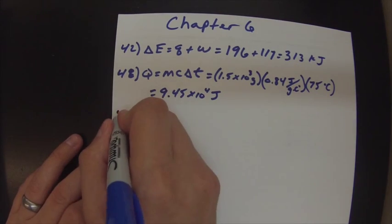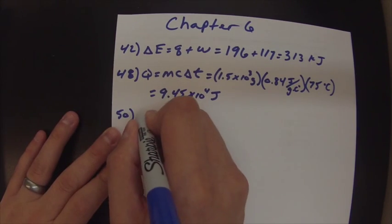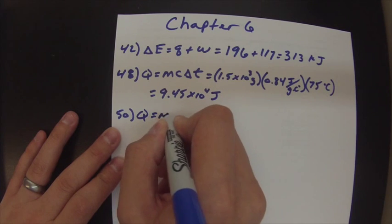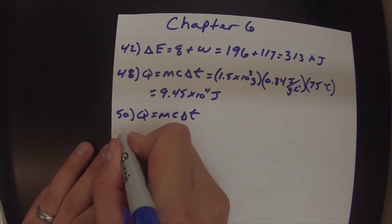Next up is number 50. Number 50 says for an unknown mass of each substance initially at 23 degrees Celsius, if it absorbs 1.95 times 10 to the third joules of heat, the final temperature is recorded. Find the mass. So we're using the same equation here, Q equals MC delta T. The only difference is here it gives us the energy, the specific heat, and the temperature change, and it wants us to calculate the mass. So it's really simple, I'm just going to do A.